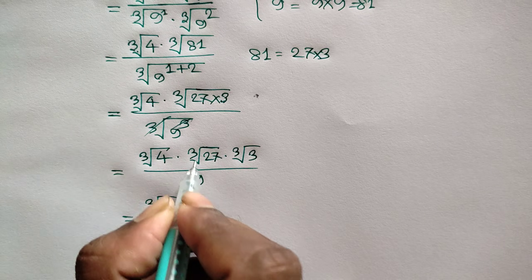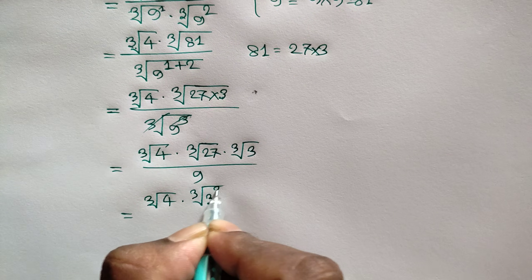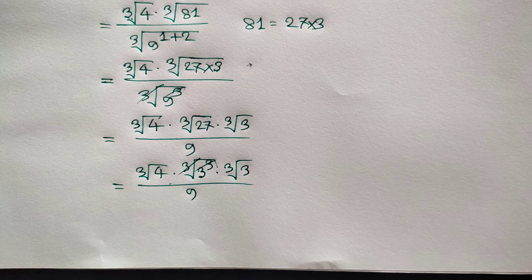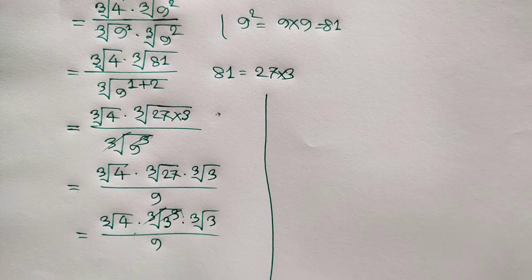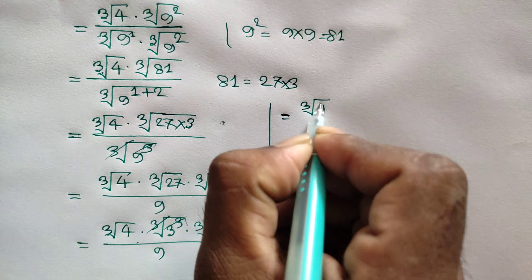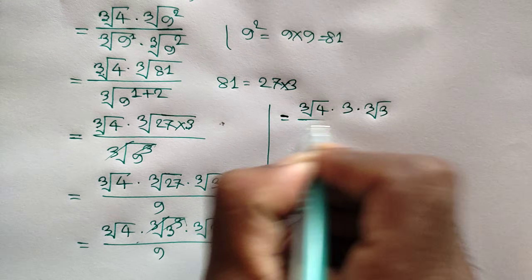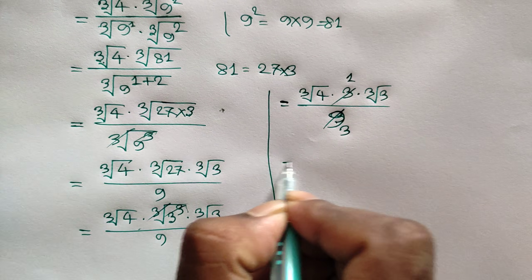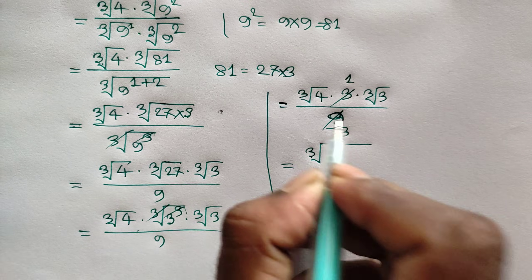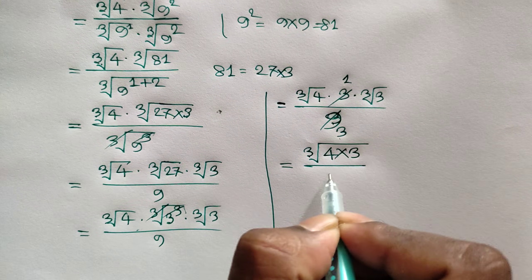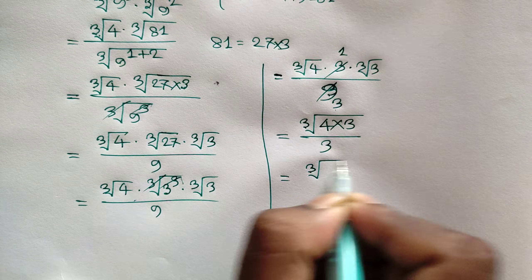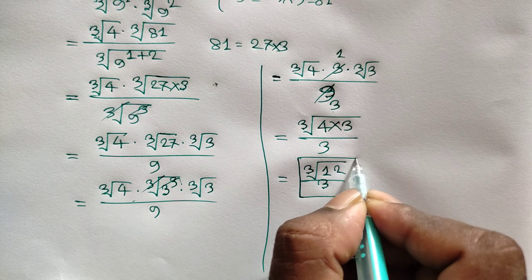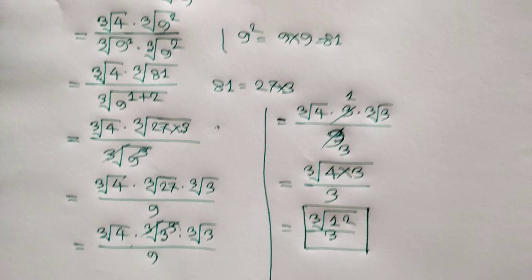This is equal to cube root of 4 times cube root of 27 times cube root of 3 over 9. Cube root of 27 can be written as 3 cubed, so cube root of 27 equals 3. We get cube root of 4 times 3 times cube root of 3 over 9, simplifying to cube root of 4 times cube root of 3 over 3. And this is our final answer. Thanks for watching — if you like this video please subscribe to my channel.